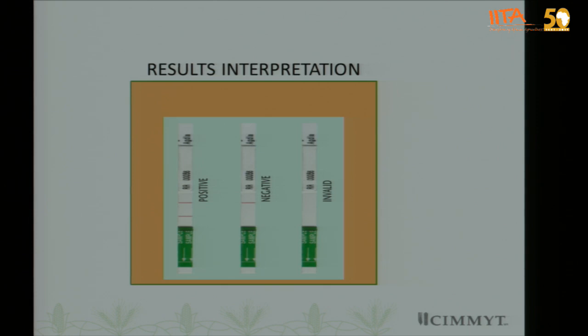The way we interpret the results: if you have two bands, that shows the sample is positive for MCMV. If there is just one clear band, the sample is negative for MCMV. If there are no bands at all, the test is invalid and you may need to repeat it.